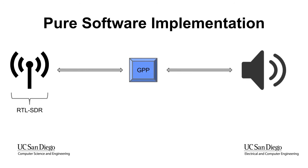This is the simplest way of implementing the radio — doing it in pure software. In between the antenna and your speaker is a GPP, with no help from anything else. This can work if you have a processor with a lot of horsepower and energy is not an issue. But if the radio modulation is extremely complex, or there are power constraints, this isn't the best solution.